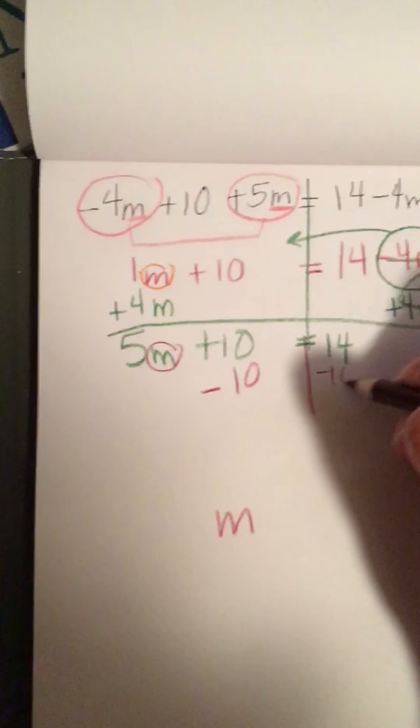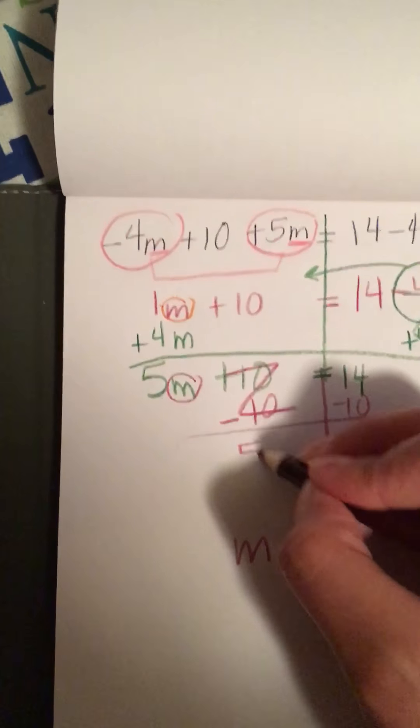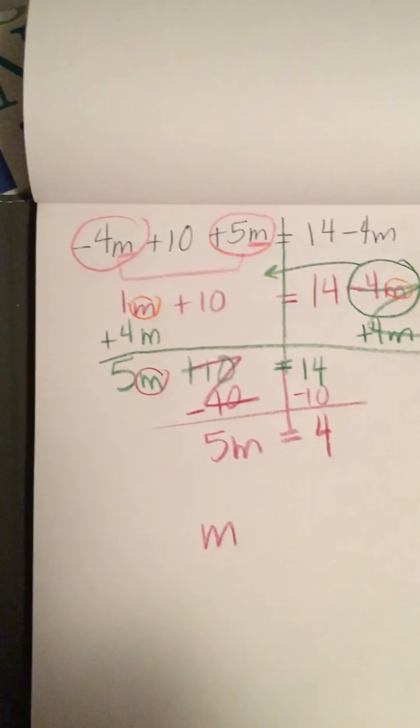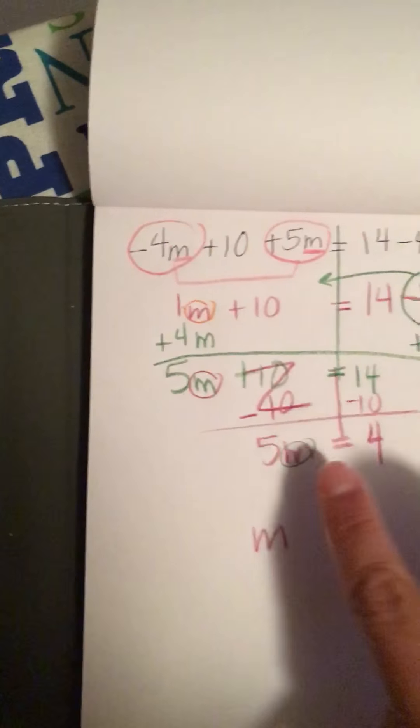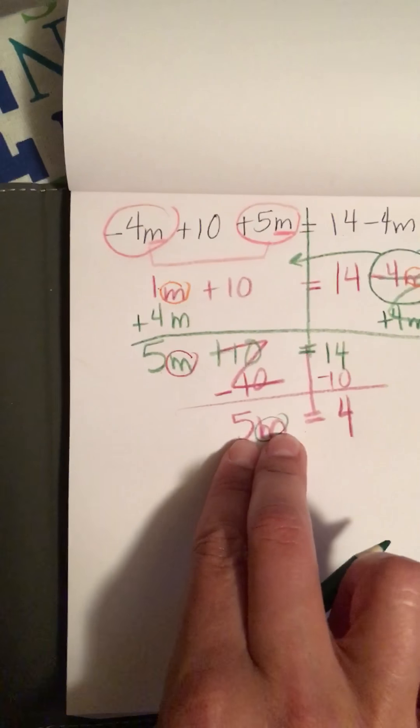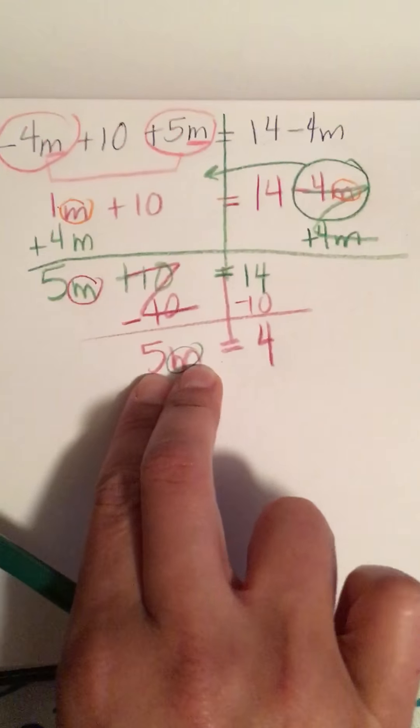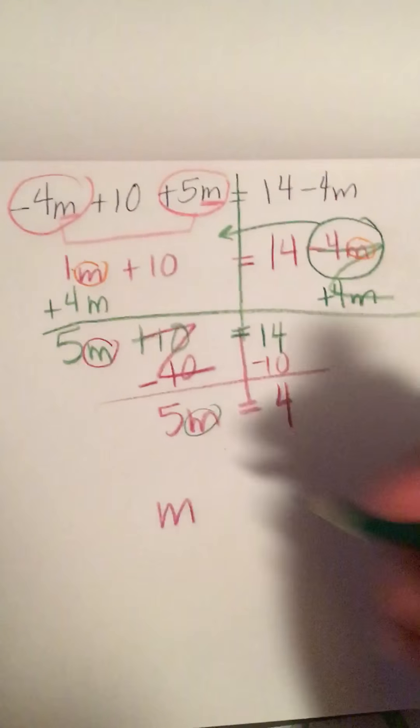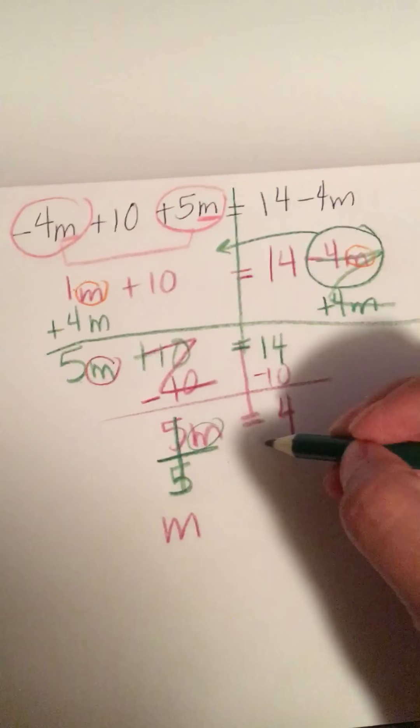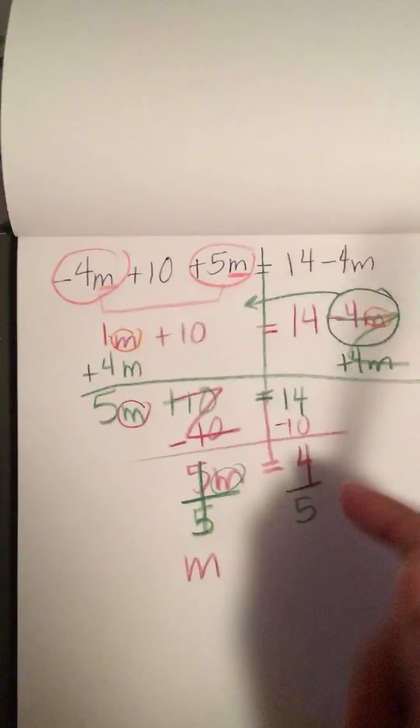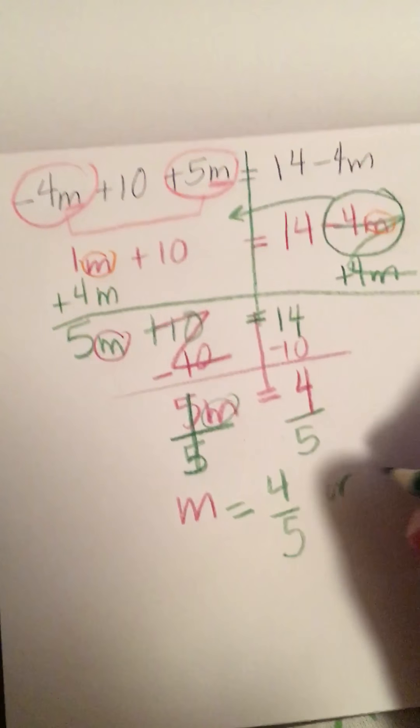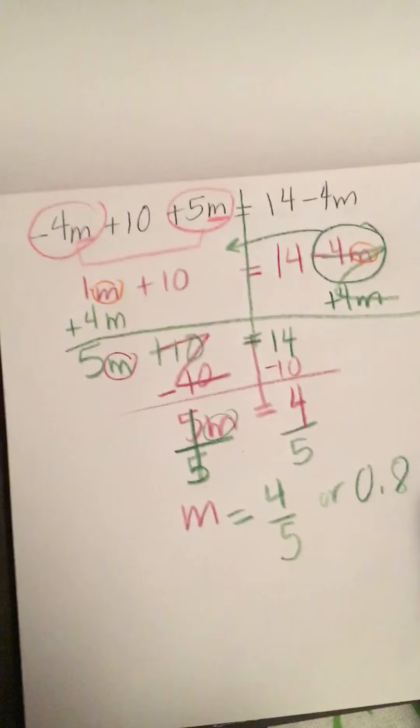Last step to get rid of the 5. I want M alone. When the letter and the number are together, the variable and the coefficient, to split them apart the opposite of multiplication is division. That becomes a 1, and what I do to one side I do to the other. So M equals 4 over 5 or if you divided, 0.8.